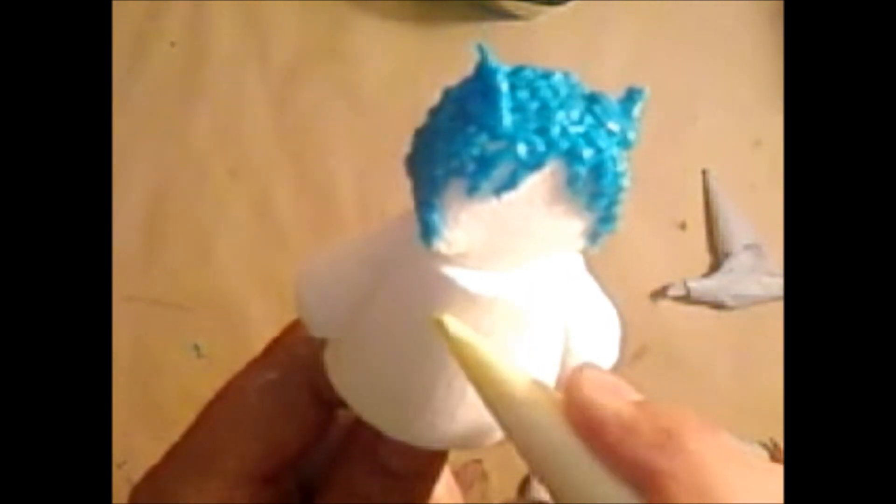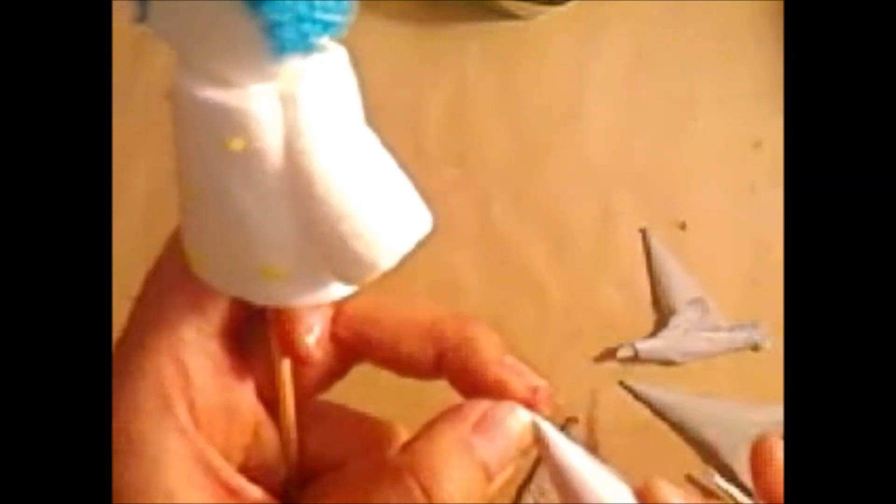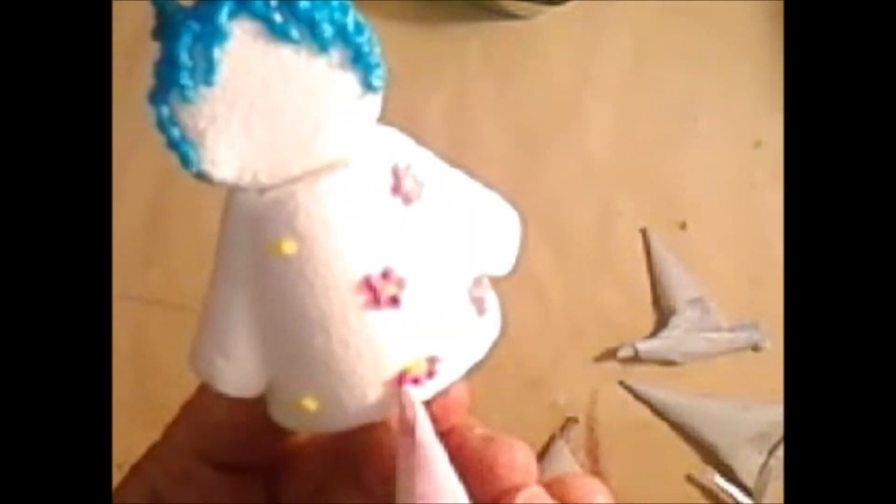And now with another color we are going to decorate the dress. You can use any type of style. In my case I am going to make flowers, letters, ethnic styles or whatever you want. We are going to make the center of our flower, and with other colors we are going to surround them so that they look like a flower.